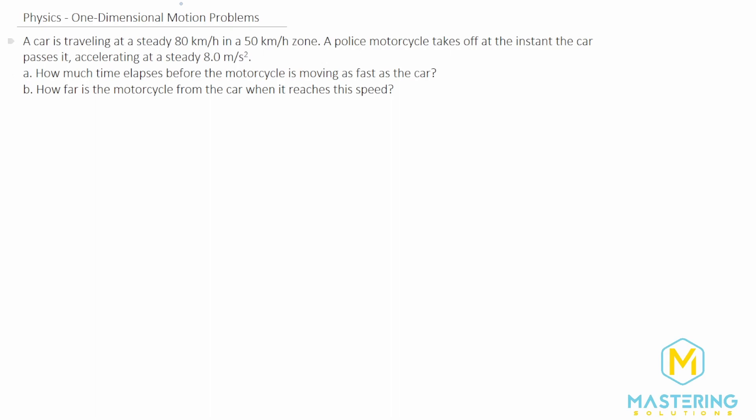Before we do that, we need to put everything in standard units. We have meters per second squared for acceleration, which is 8.0 meters per second squared. Now we need to put the velocity, the V initial of the car, into standard units. We have 80 kilometers per one hour, but we need meters per second.